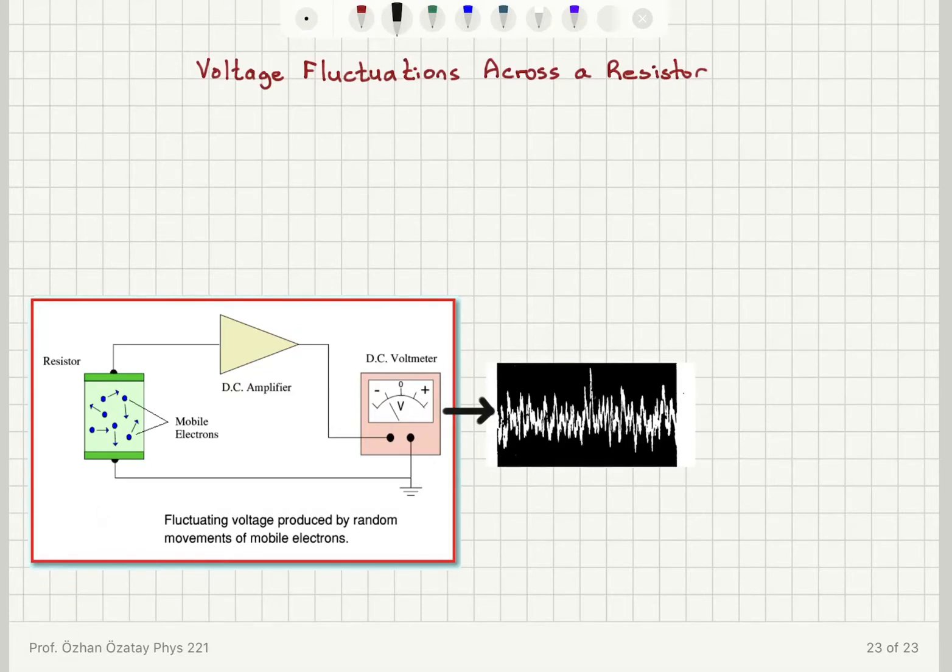So we have random voltage fluctuations across a resistor, and this is due to fluctuations in the number of electrons.